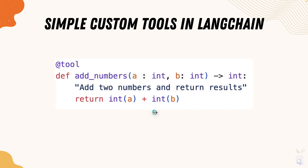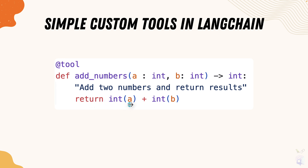Building a simple tool in LangChain is straightforward. You define a function — for example, def add_numbers — specify that the parameters are integer values and the return type is integer as well, and add a description such as 'add two numbers and return a result.' The description is very important because it tells the LLM when to invoke the tool. You decorate the function with the @tool annotation, and that's your simple tool in LangChain.